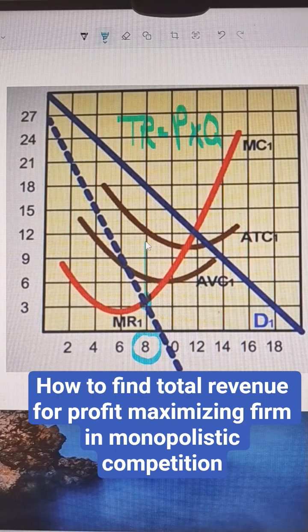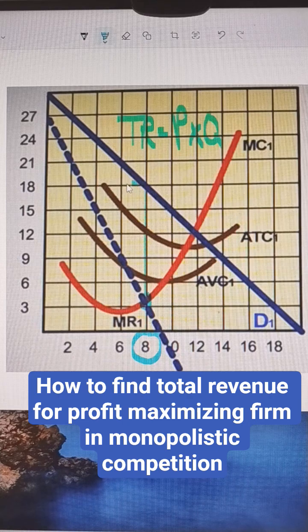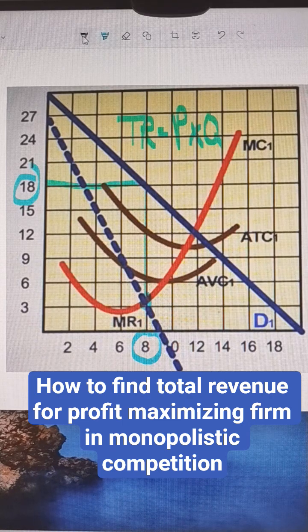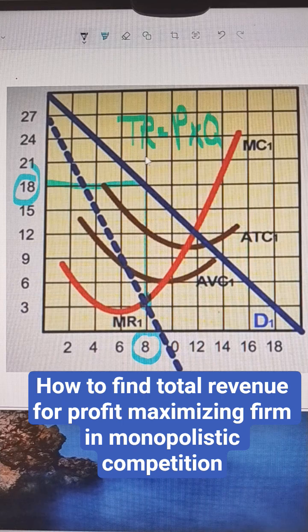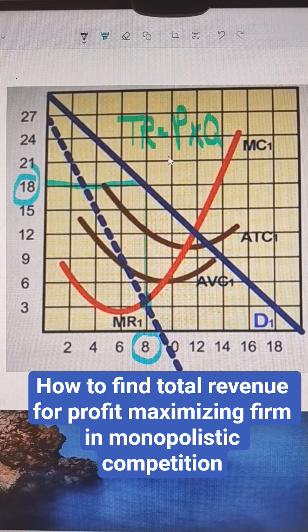We're going to follow that up to where the demand curve is. So we follow that over here. So the profit maximizing price is 18.